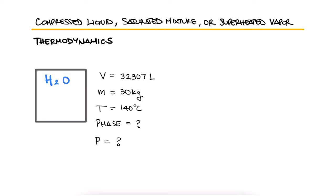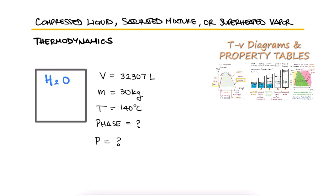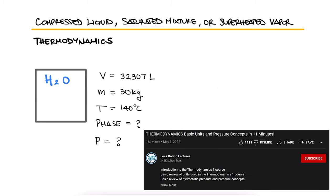Try pausing here to solve this problem yourself before watching the solution up next. This is the third example for the T-V Diagrams and Property Tables 13 minute lecture video. The links to the other examples on this topic and the other lectures of the thermodynamics course are found in the description below.